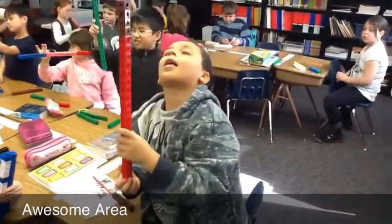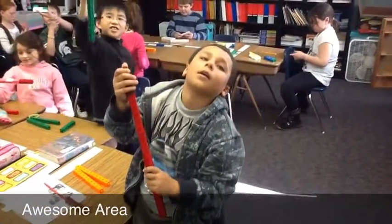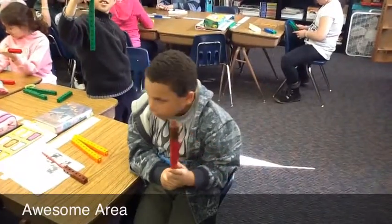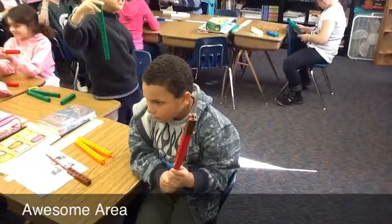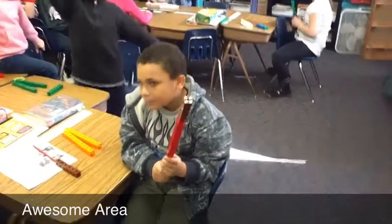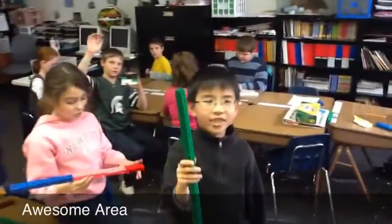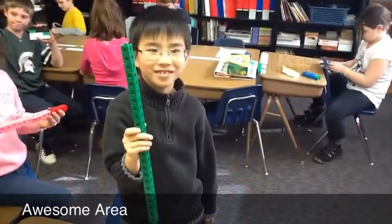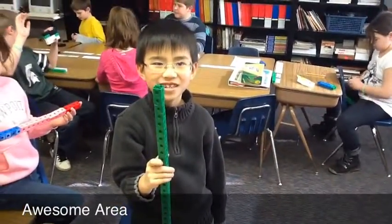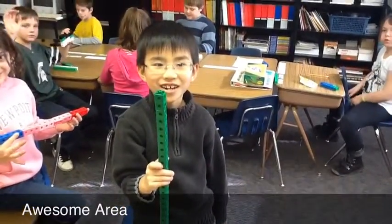How many rows do you have? How many rows do you have? Think about it, I'll come back to you. How many rows do you have? How is that an area? One. How many rows do you have? One. How many rows do you have? 24.